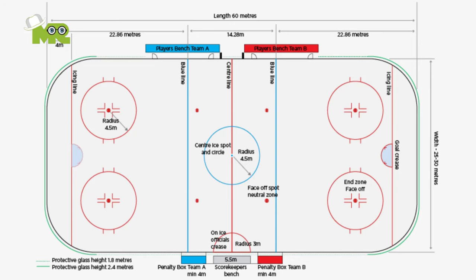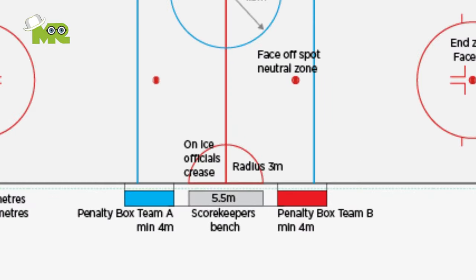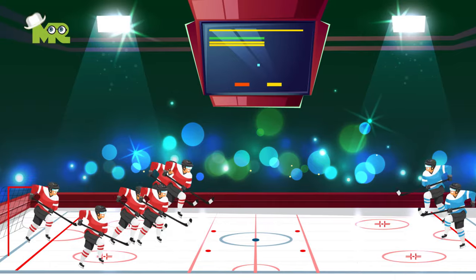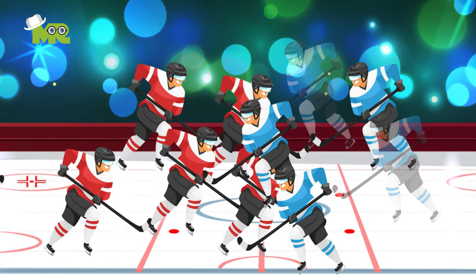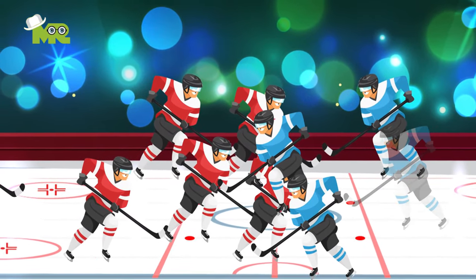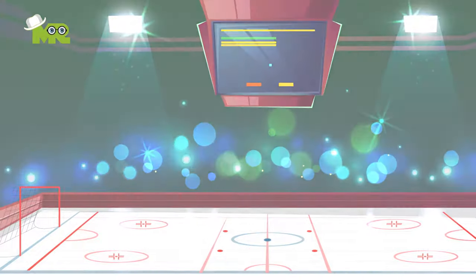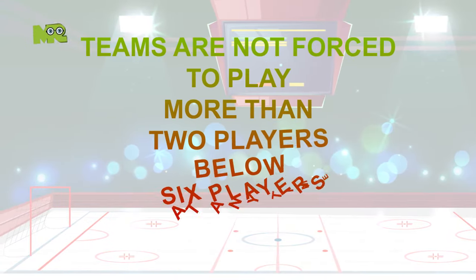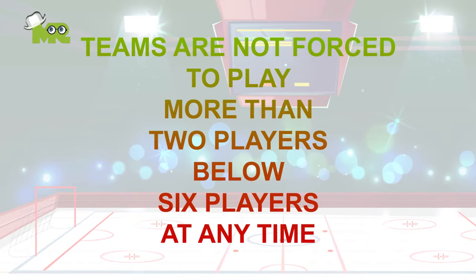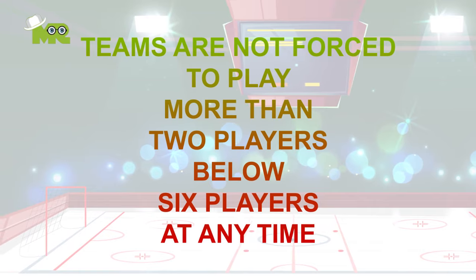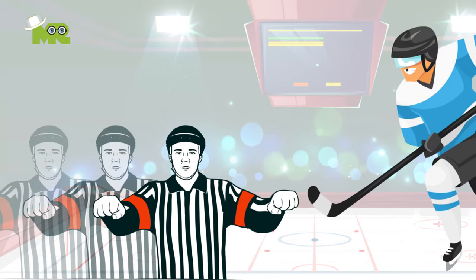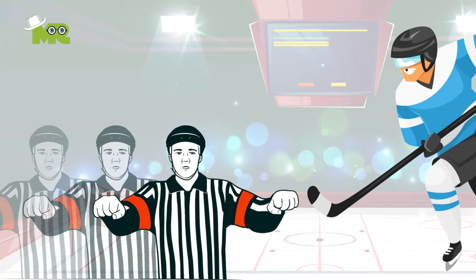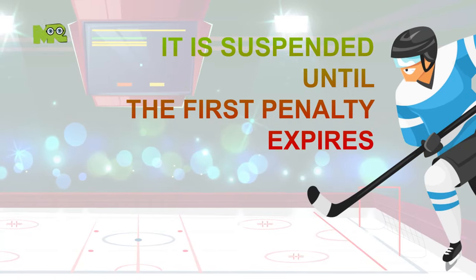11. If a penalty is called on a goalie, a teammate serves his time in the penalty box. 12. A team plays shorthanded when one or more of its players is charged with a penalty. 13. Teams are not forced to play more than two players below six players at any time.